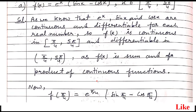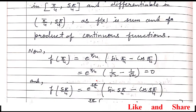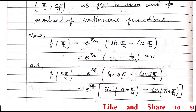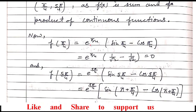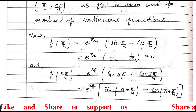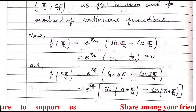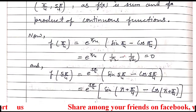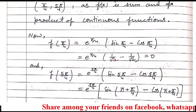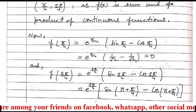Now we move to the third condition of Rolle's theorem: the function's value at the lower limit and at the upper limit. The lower limit is π/4 and the upper limit is 5π/4. When we substitute π/4 into the function, we get e^(π/4) times (sin(π/4) minus cos(π/4)), which is e^(π/4) times (1/√2 minus 1/√2), which equals 0. So the function's value at the lower limit is 0.